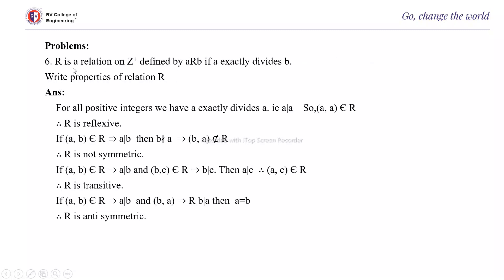One more problem: R is a relation on Z-plus defined by A is related to B if A exactly divides B. For reflexive: for all positive integers, A divides A. So (A, A) belongs to R. Therefore, R is reflexive. For symmetry: if (A, B) belongs to R, A divides B. But when A divides B, it is not necessarily true that B divides A. For example, 1 divides 2, whereas 2 does not divide 1. Therefore, R is not symmetric.